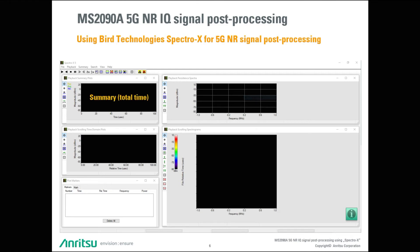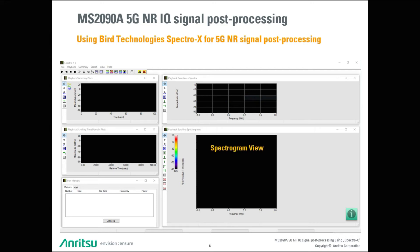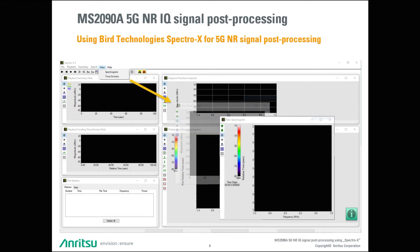First of all, it is possible to display the entire signal length in a power versus time representation, showing max, average, and min traces. Next, you can see power versus time but this time in a freely scalable time axis. In the top right window, you see a density spectrum, very similar to a real-time spectrum analyzer density display. In the bottom right corner, you see a spectrogram view. All three displays can run using faster or slower speed, equal to different zoom factors. Via the menu bar, it is possible to display a spectrogram in time display where the user can scroll in predefined steps across the signal.